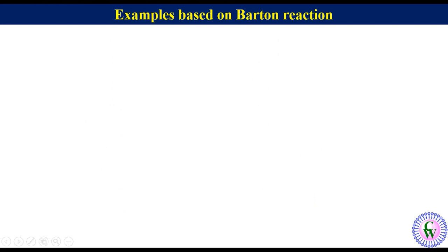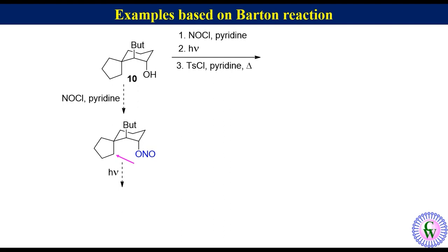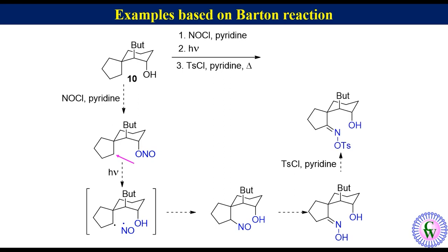Let's have one more similar example in which we have to find the structure of the final product formed from compound 10 after three given reaction sequences. Reaction of compound 10 with nitrosyl chloride gives the corresponding nitrite. This is the delta carbon with hydrogen closer in space to the nitrite. Photolysis of nitrite followed by delta hydrogen abstraction gives this alkyl radical and NO radical. These two radicals combine together to produce nitroso alcohol, which after tautomerization gives the oxime. In the presence of tosyl chloride in pyridine, the OH of the oxime gets tosylated to produce the tosylated product, which after heating undergoes Beckmann rearrangement to produce this lactam.